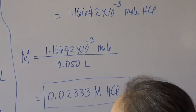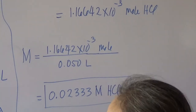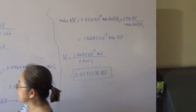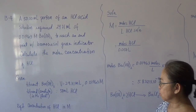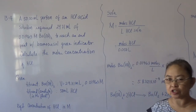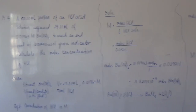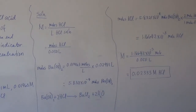Always take note that in a titration process, the concentration of the titrant is always known, and usually the unknown is the concentration of the analyte. That's problem 13.4. Thank you.